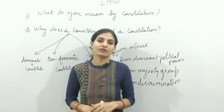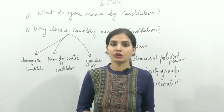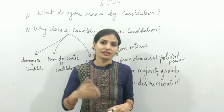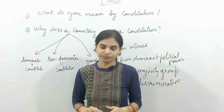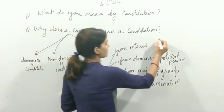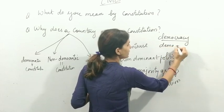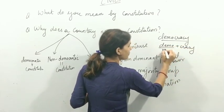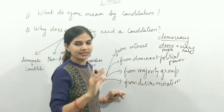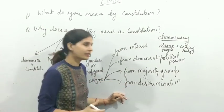Whether a country is democratic or non-democratic, the constitution plays a key role. Democracy is basically the meaning of 'Demo' plus 'Cracy.' Demo means People, and Cracy means Rule. So a democracy is a government or country which is ruled by the people or citizens.